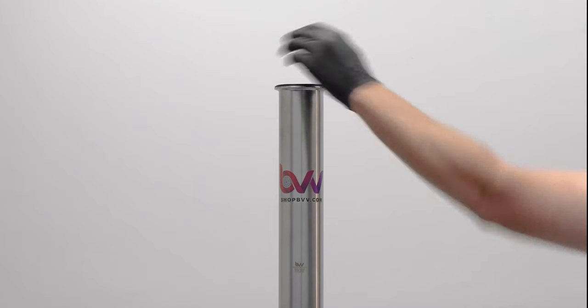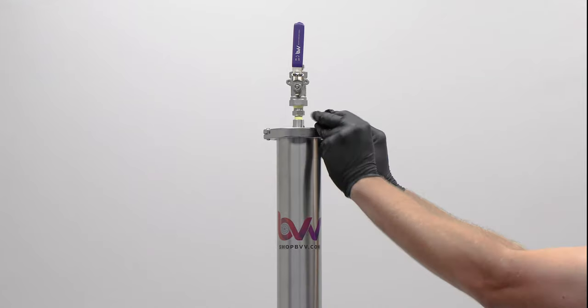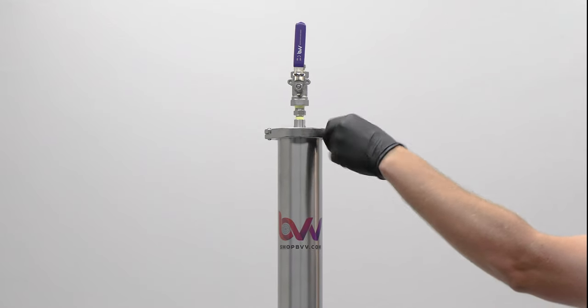Place the top cap on top of the extractor column and secure with a single pin clamp. Next, take out both of your stainless steel braided hoses.